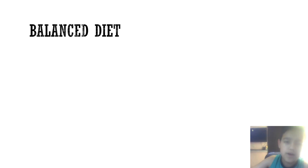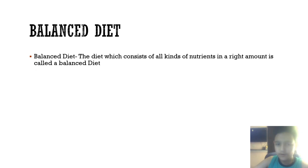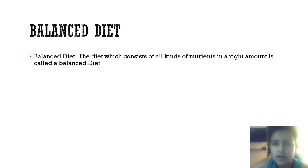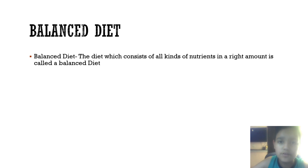Now we have balanced diet. What is a balanced diet? The diet which consists of all kinds of nutrients is called a balanced diet — all kinds of nutrients but in the right amount. An excessive amount of nutrients can cause disease or other problems.